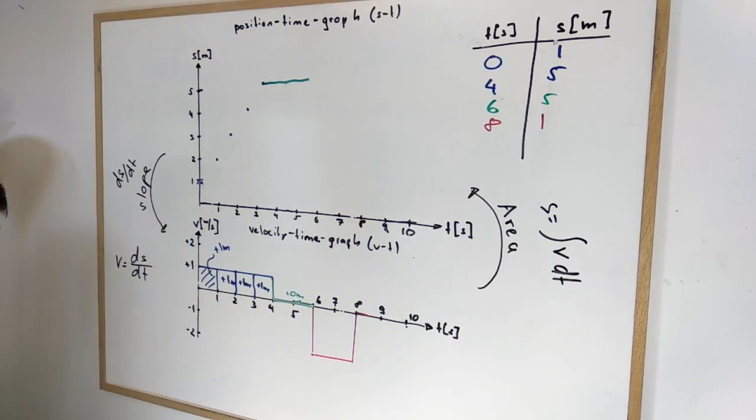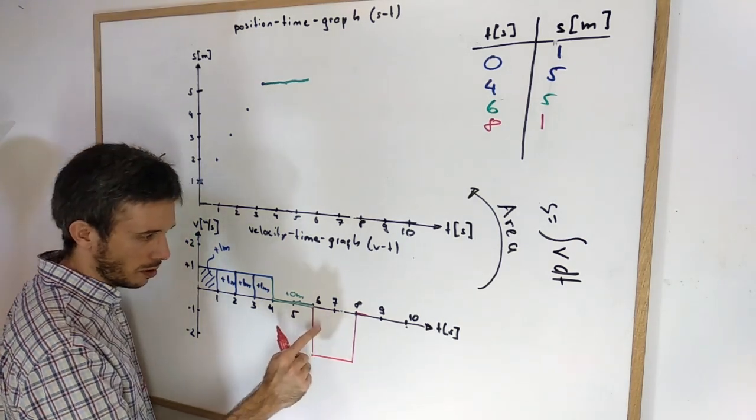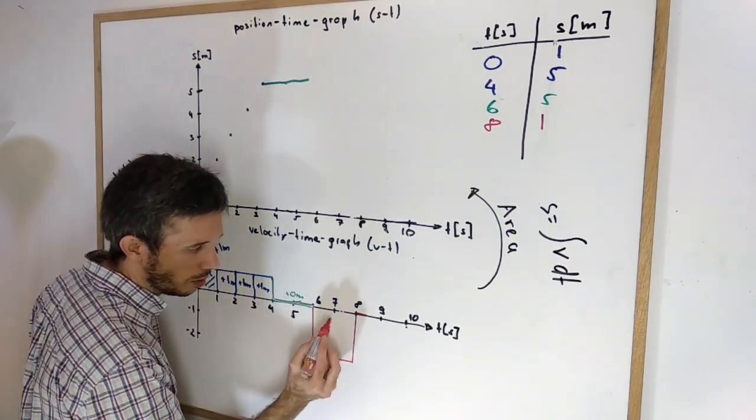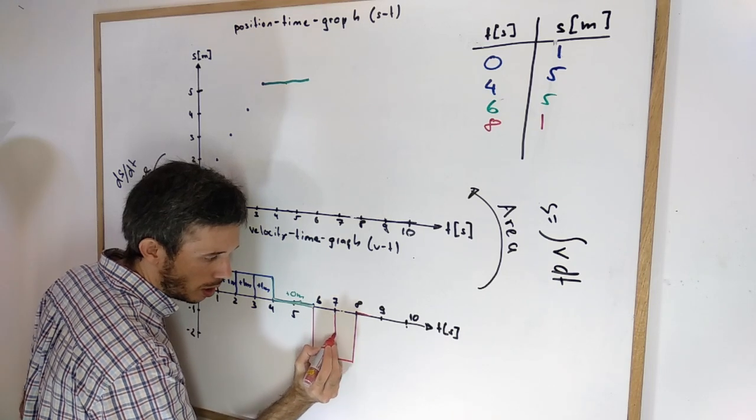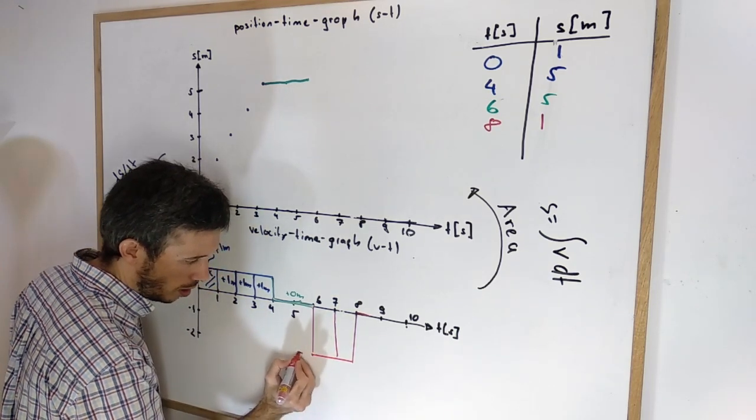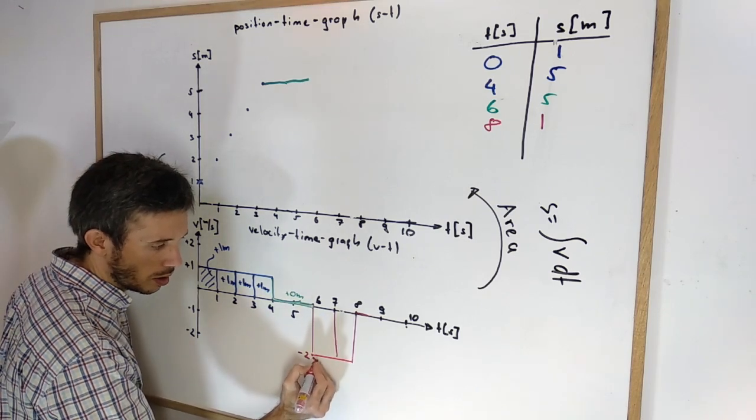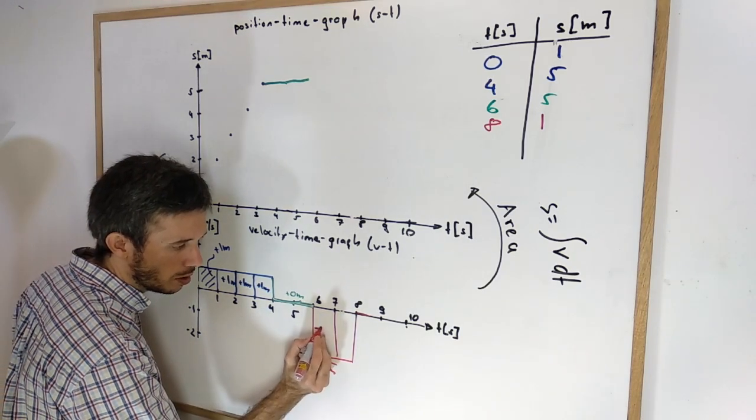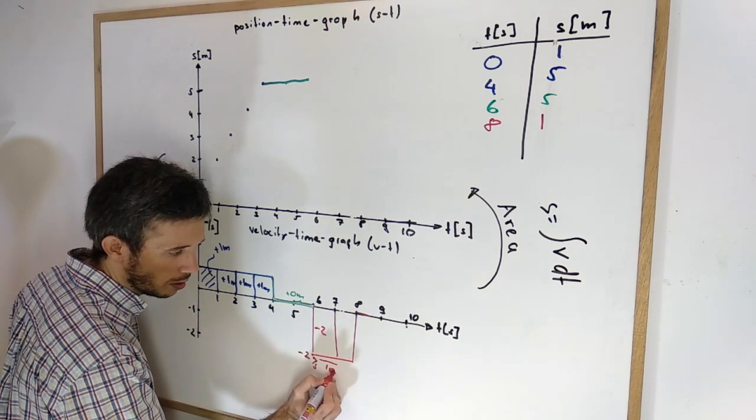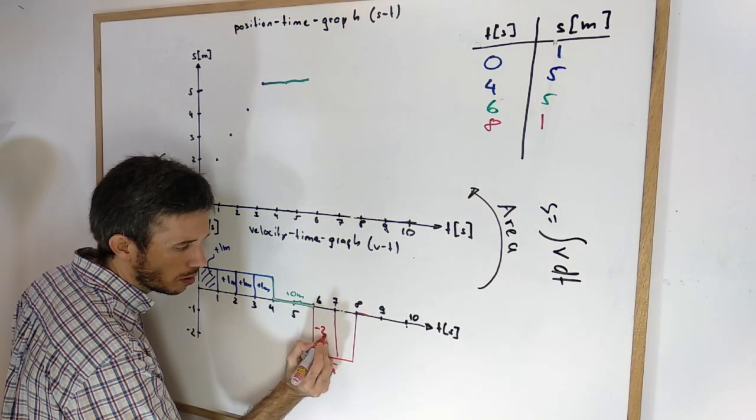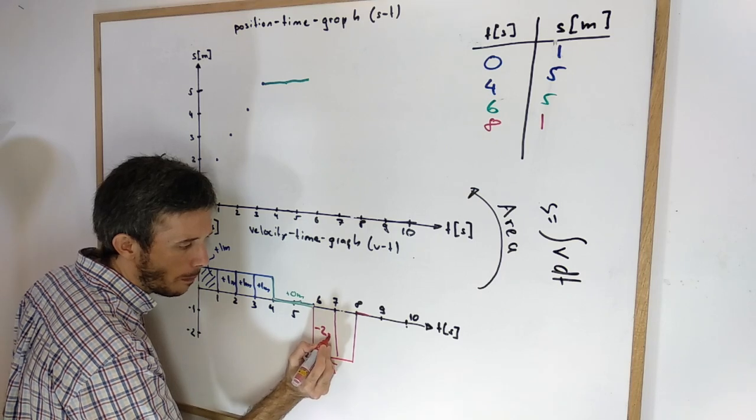And now it gets interesting. My velocity time graph is below the axis. So what do we do? From 6 to 7 what is my area? My area is minus 2 meters per second times 1 second. So minus 1 second. So that gives me minus 2 meters.